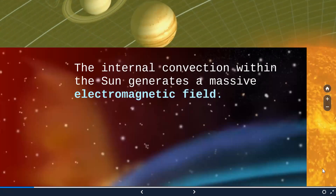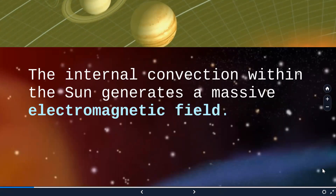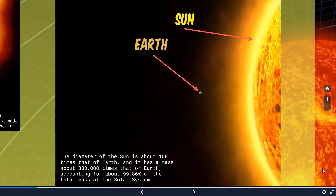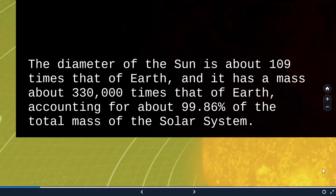Inside the sun, there is a massive electromagnetic field which is generated due to the internal convection within the sun. When you compare the size of the sun and Earth, the sun is so huge that its diameter is about 109 times that of Earth and it has a mass of about 33 lakh times that of Earth. When you compare the mass of the solar system, most of the mass is due to the sun — 99.86% of the total mass of the solar system.